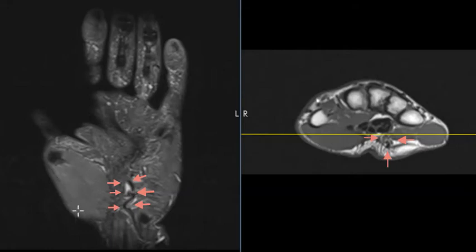This is called the thenar area, this is called the hypothenar area. So when you have repetitive microtrauma from a job or sport over this area, this artery that goes right through there can be injured.